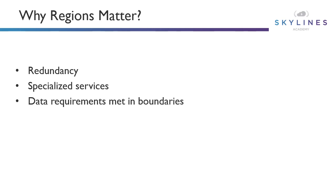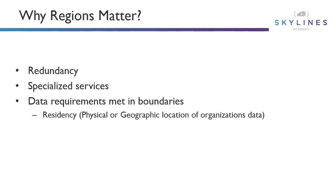The main consideration is data requirements and boundaries. Residency is a big one — the physical or geographic location of your organization's data, where can that data actually reside? Sovereignty is another — does it have to remain inside the US? There are rules between different countries about how data is governed. Compliance is another factor — regulatory compliance or compliance with your customers' policies. And last but not least, resiliency — choosing regions based on that resiliency requirement.